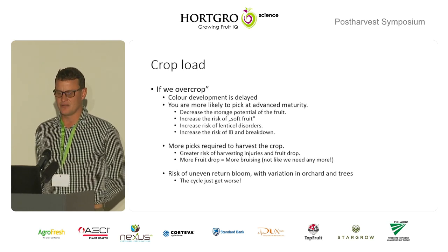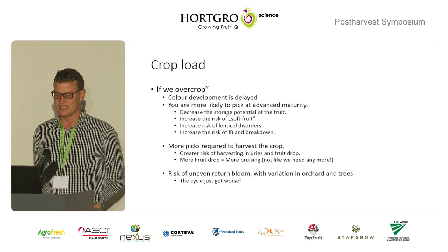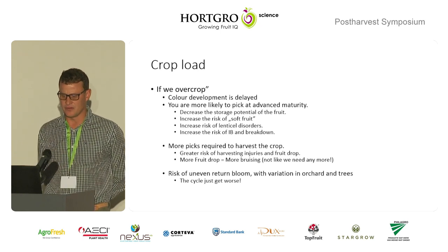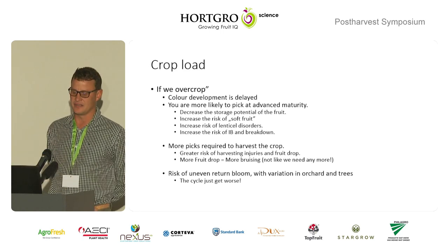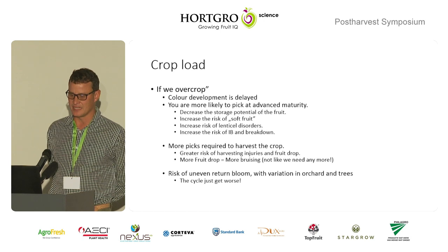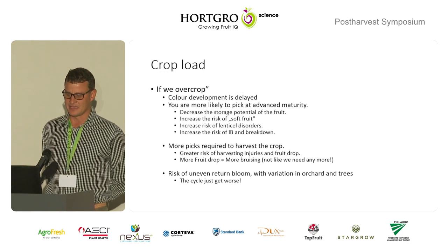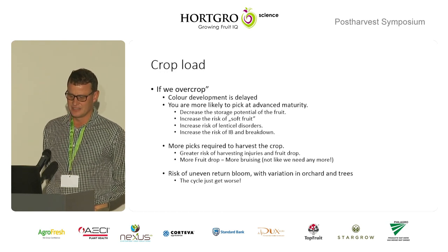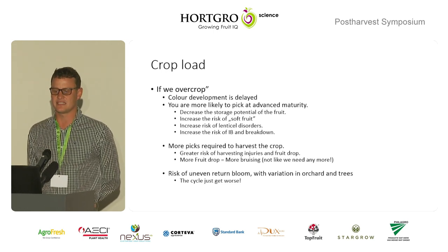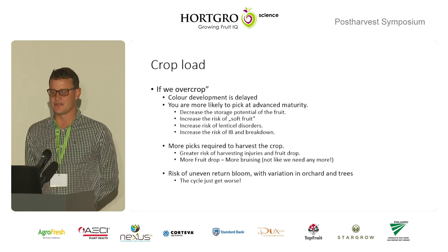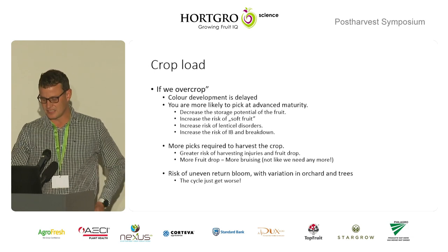On a production side, it also requires more labour input — you would probably need more picks to go through the orchard. Each time you start harvesting fruit, you also increase your risk of handling errors, like bruising and fruit drop. And it's not like we really need any more bruising at this stage of the fight. On the downside, if you're over-cropped, you also have a risk of return bloom issues in the next season. If you have issues with return bloom, you end up with more variation in your orchard and on your tree, and the cycle just gets worse.